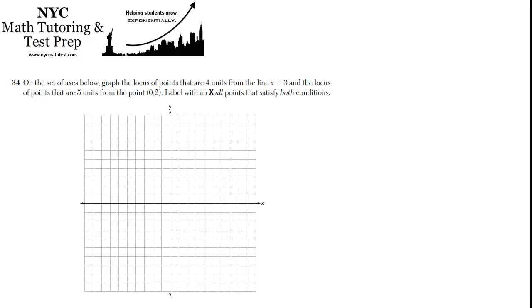This is a very common type of problem. You've got to take each part independently. First we're being asked to graph the locus of points that's 4 units from a line, and then the locus of points that's 5 units from a point. Those are going to be two different loci, and then we're going to label with an x the points that satisfy both conditions, the intersection of those two loci. Let's take them one at a time.